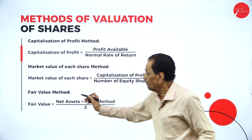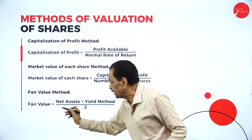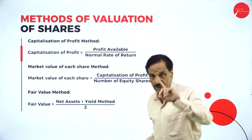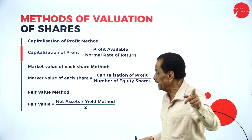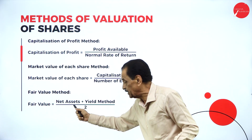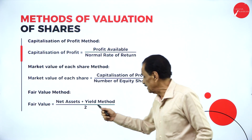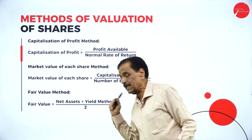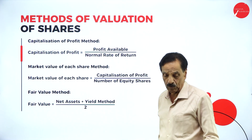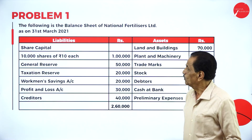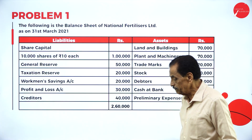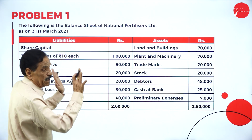The fair value method combines both: net asset method (also called capital employed method) result plus yield method result, divided by two. Now let us move on to solving a problem.